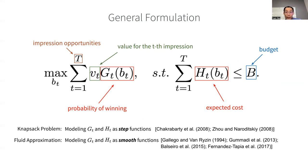So for example, instead of a binary win or loss, we can model gt, the winning probability, as a non-decreasing differentiable function of bt.